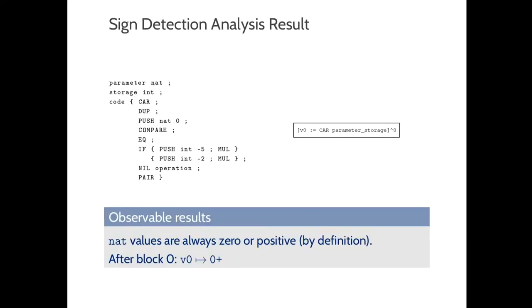Running a simple sign detection analysis on this example, we were able to detect that the sign values of type NATs are, by definition, always 0 or positive. After block 0, we have that V0 sign value 0 or positive, because V0 gets its value from the parameter, which is a nat.